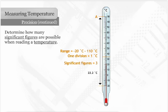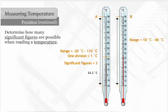Thermometers are designed for different tasks based on range and precision. Thermometer B has a range of 10 to 40 degrees Celsius. Each division is equal to 0.2 degrees Celsius.